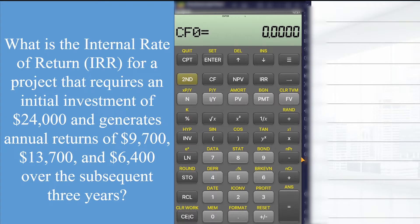By using the BA2 Plus Professional, we can easily solve this question. To solve this, firstly we will click on CF cash flow, then we will press $24,000 minus to indicate the outflow, press enter.